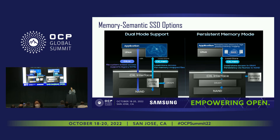In the persistent memory mode, only the DRAM space is exposed as memory, not the NAND space. All load/store operations go to DRAM. There is an external power supply connector for an optional battery or external power supply. Only upon a GPF-based signal for persistency purposes is the data dumped to NAND and then restored back to DRAM. Otherwise, most accesses go directly to DRAM only.